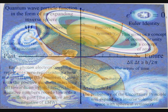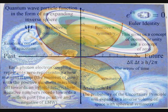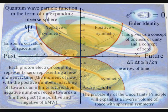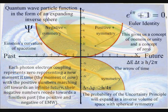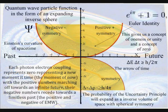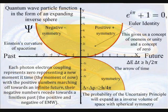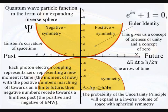Each photon-electron coupling represents zero, representing a new moment in time, the moment of now, the positive numbers marching off towards an infinite future and the negative numbers receding towards a limitless past, the positive and negative of electromagnetic waves.